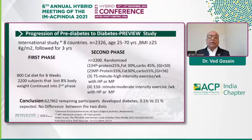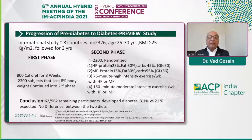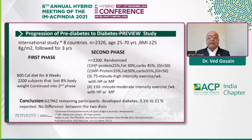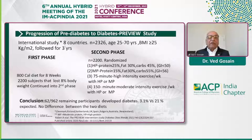A more recent international study looked at the progression of pre-diabetes to diabetes. In the first phase, patients were assigned a very low-calorie diet of 800 calories, and 2,200 subjects lost 8% of body weight. Those who lost that weight were then randomized to a high-protein diet (25% of calories from protein) or a moderate-protein diet (15% of calories), and either 75-minute high-intensity exercise or 150-minute moderate exercise. At the end of about three years, 62 out of 962 remaining patients developed diabetes — approximately a rate of 3%, whereas 21% would have been expected.